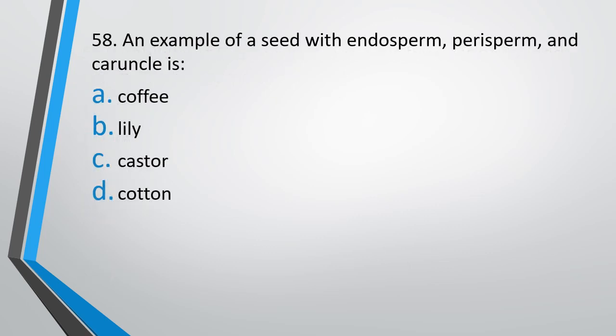Question number 58. An example of a seed with endosperm, perisperm, and caruncle is: coffee, lily, castor, or cotton? The correct answer is option C, castor.